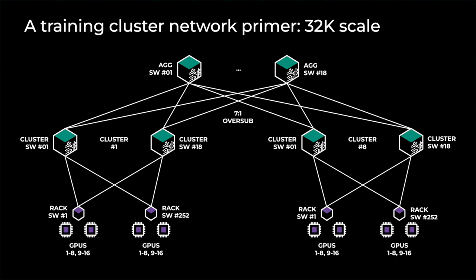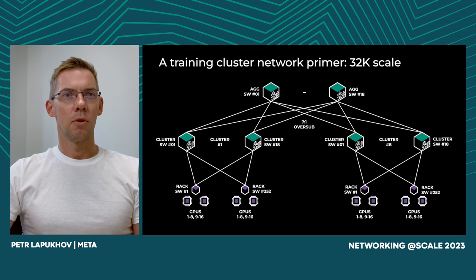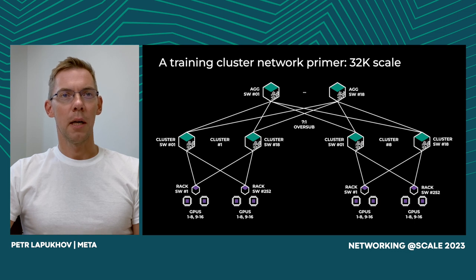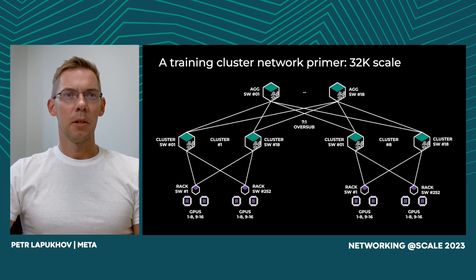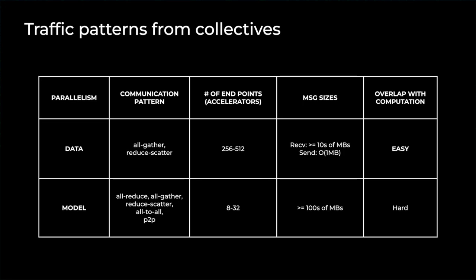There are many details to implementing RoCE, which Adi will discuss separately. But I want to stress that this is pushing RoCE or InfiniBand to its limits by building very large clusters of thousands of GPUs. Inside these fabrics, training generates two types of traffic patterns: one from data parallelism, another from model parallelism. Let's first look at data parallel patterns — you generate patterns like all-reduce, all-gather, and reduce-scatter. These are well known and have been used for years. Message sizes are usually substantial, but they grow smaller as you increase the scale-out domain size.